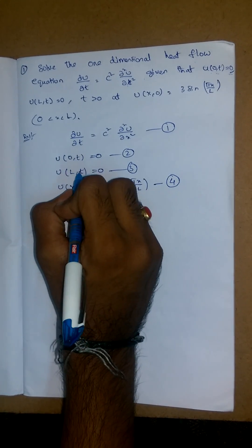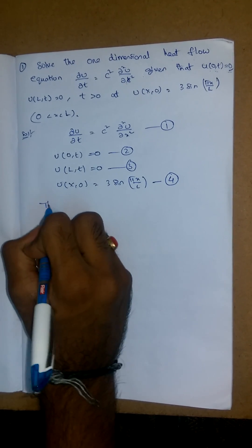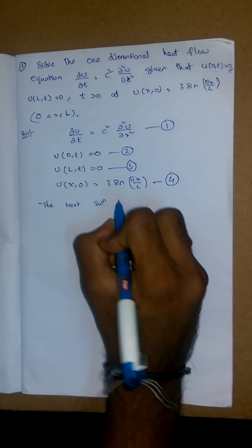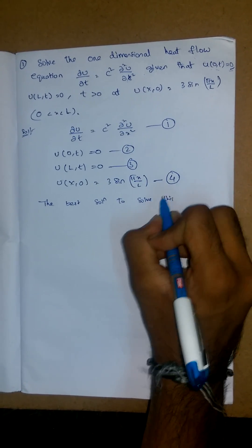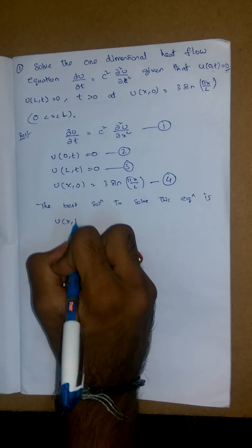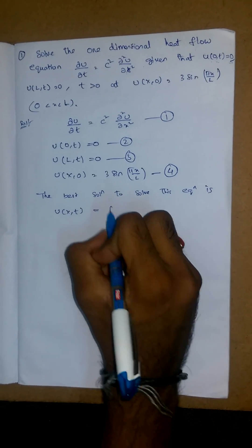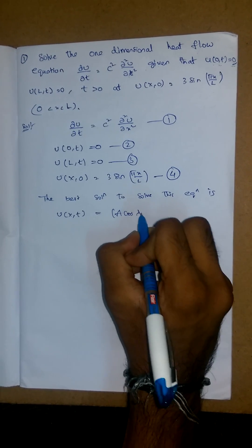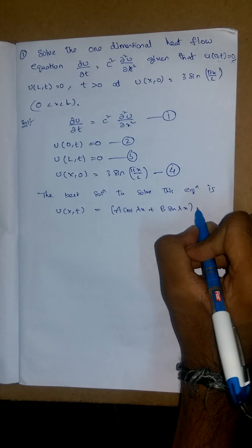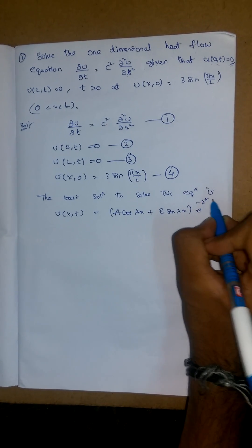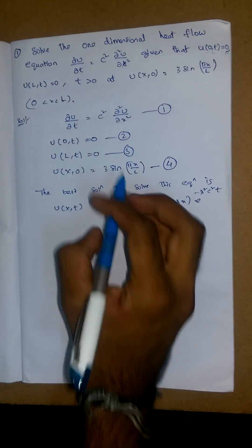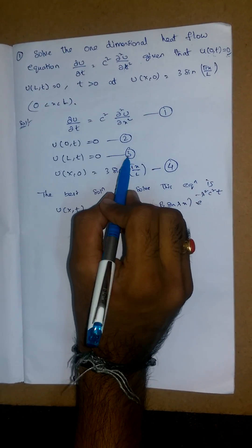The best solution to solve this equation is u(x,t) = (A cos λx + B sin λx) · e^(−λ²c²t). Now let us apply boundary conditions from equations (2) and (3) into this solution.